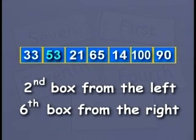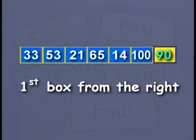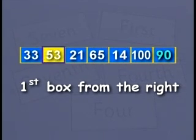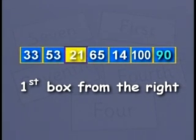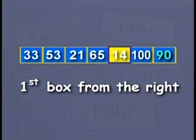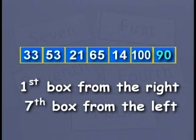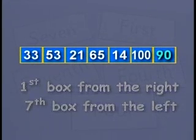90 is in the first box from your right. So from your left, 90 would be in box number 1, 2, 3, 4, 5, 6, 7. So 90 is in the seventh box from your left.